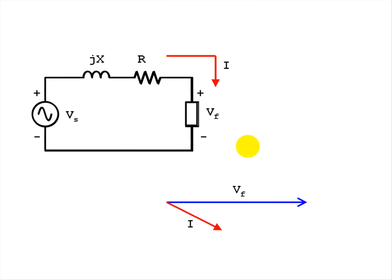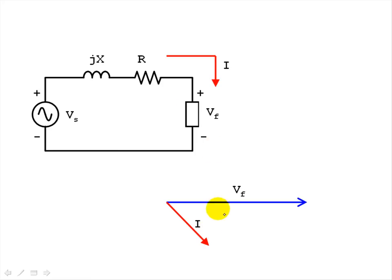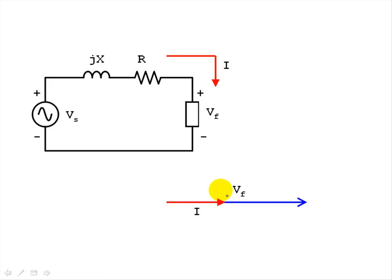Let's go back to the basics. This load is inductive because the current lags behind the voltage of the load. This load is more inductive than the previous one because the lagging angle is bigger. This load is purely inductive because the current is lagging 90 degrees behind the voltage — that load can be represented with an inductor. And this one, because the current is in phase with the voltage, is a purely resistive load with zero phase difference, representable with a resistor.